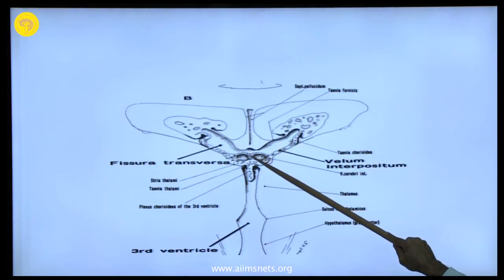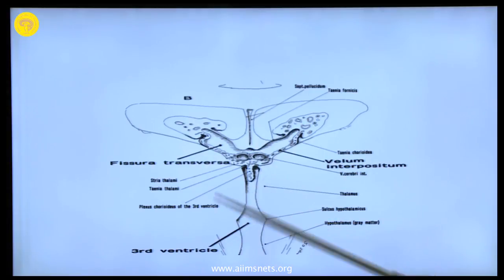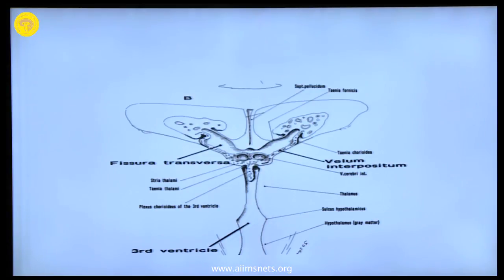Then you do an inter-fornical approach and enter the third ventricle. This is the least invasive approach, but usually not possible in pathological situations because of distortion. You typically enter one of the lateral ventricles then through the foramen of Monroe. I usually don't enlarge the foramen — if you think you have to enlarge it, you should change your approach, because you may damage the fornix or one of the veins.